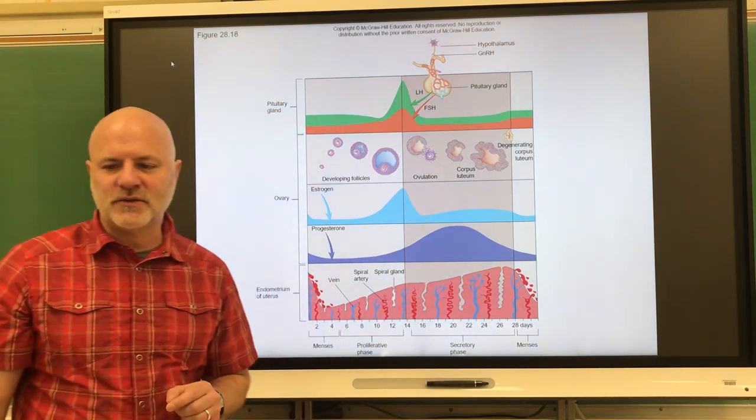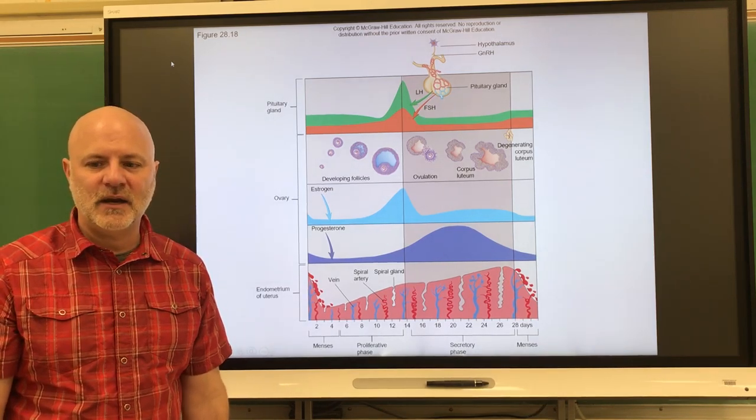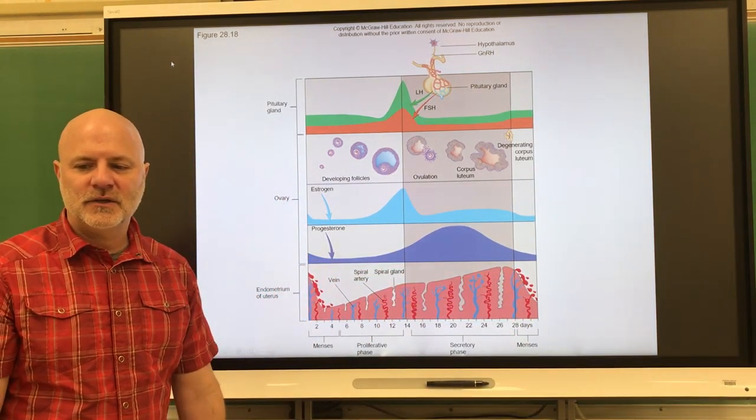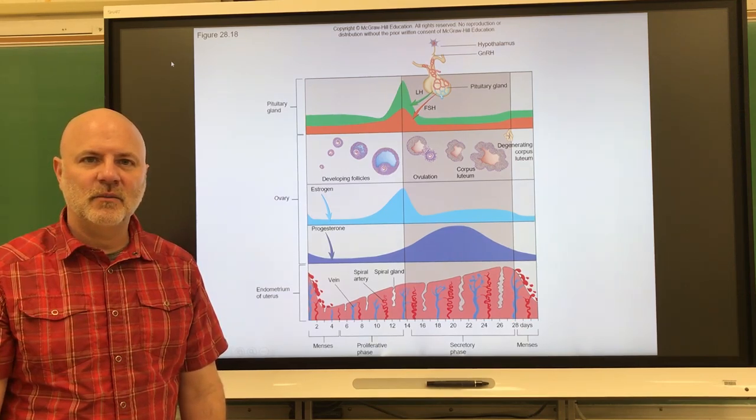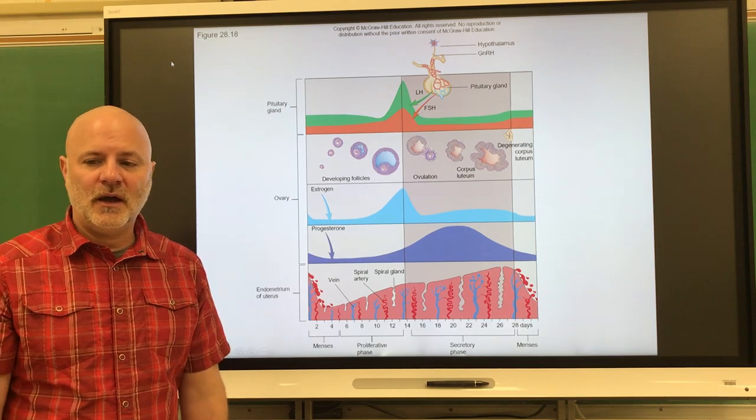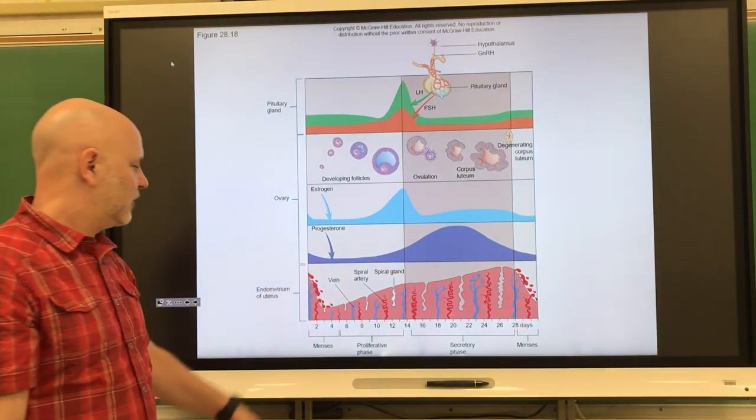Those progesterone levels are going to reduce the blood flow and blood vessels to the endometrium. What happens is the layers of the endometrium start to die and be shed. That gets us back to the first phase there. We get menstruation occurring through that time period.